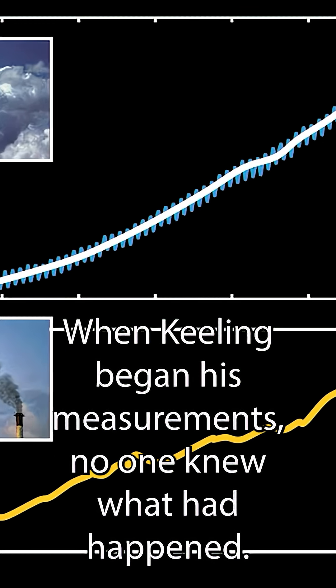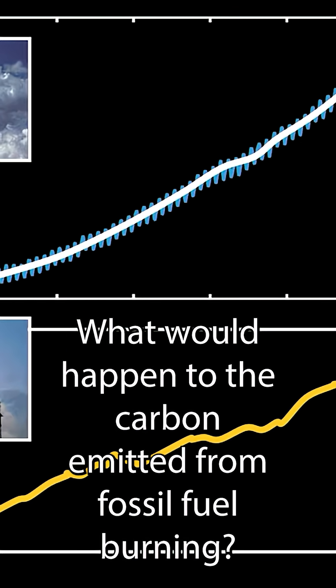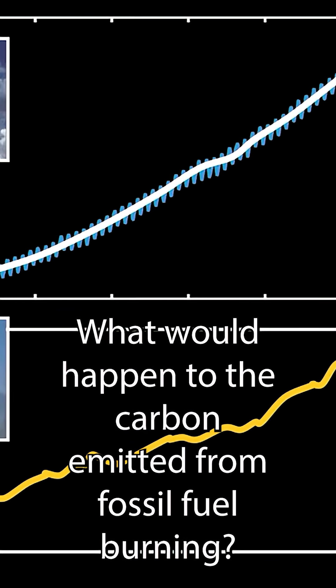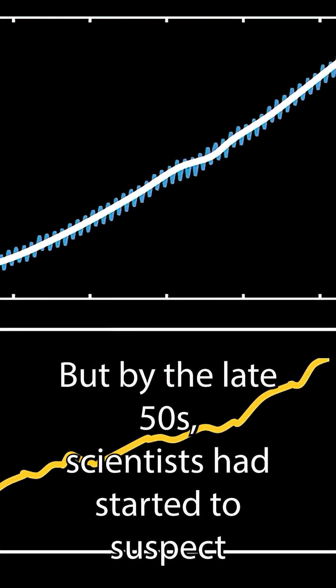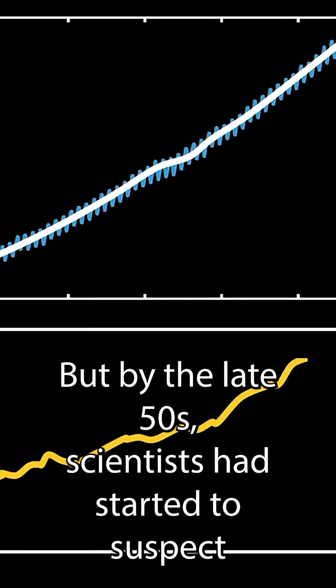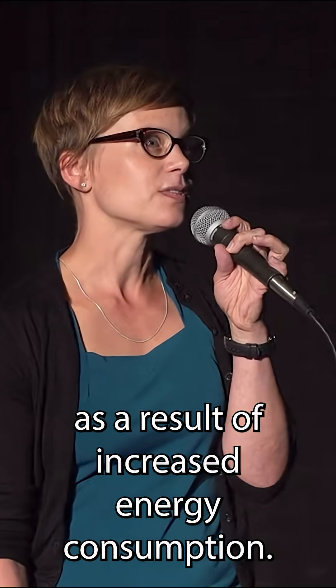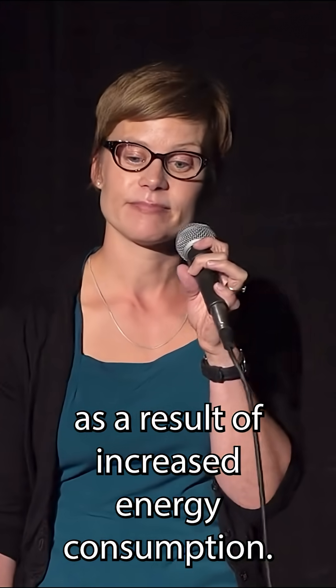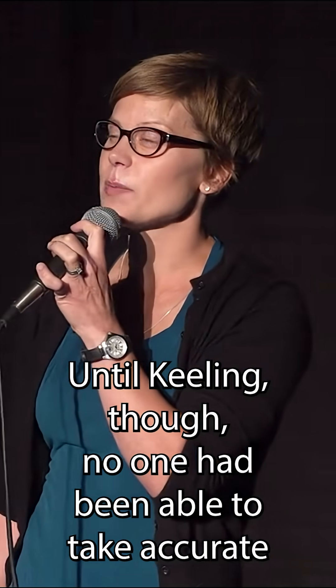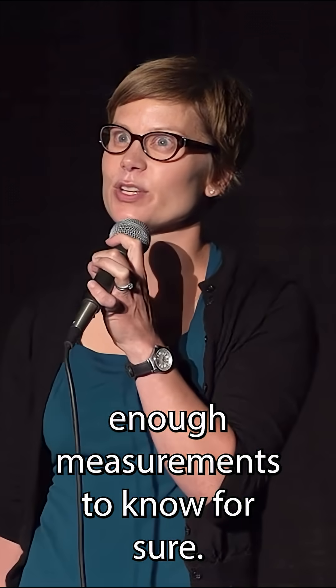When Keeling began his measurements, no one knew what would happen to the carbon emitted from fossil fuel burning. But by the late 50s, scientists had started to suspect that carbon was accumulating in the atmosphere as a result of increased energy consumption. Until Keeling, though, no one had been able to take accurate enough measurements to know for sure.